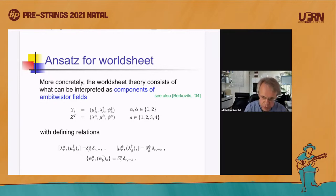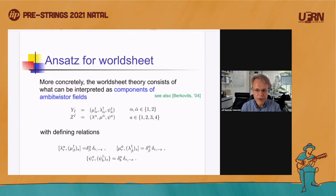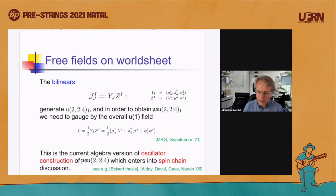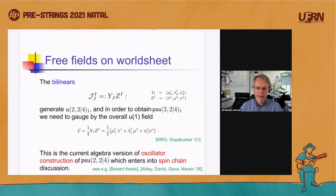Concretely, we introduce λ_α and ν^†_α (with α, α̇ running over 1,2) — two copies of what was previously ψ^± and η^±, giving eight symplectic bosons — and fermions S^A with A running 1 to 4, giving eight free fermions. The symplectic bosons satisfy the same commutation relations as before, and the fermions the standard fermionic relations. These bilinears generate the super affine Kac-Moody algebra U(2,2|4) at level 1. To get PSU(2,2|4), you gauge by the overall U(1) field.